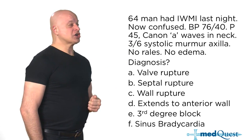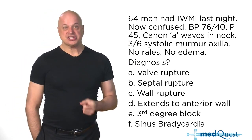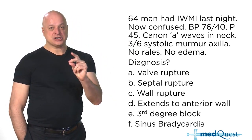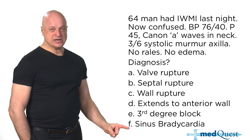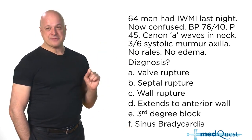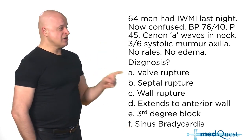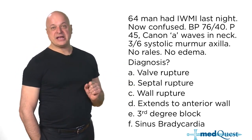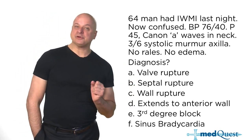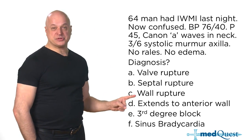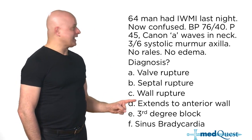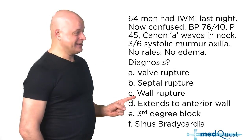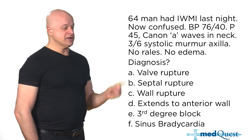The clue here is bradycardia with hypotension. Why isn't it sinus bradycardia? Because valve, septal, and wall rupture all give you tachycardia. Wall rupture presents with the chief complaint of pulseless electrical activity — essentially dead.